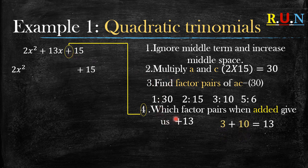When you look at 1 and 30, that's 31 — very far from positive 13. Then 2 and 15 gives us 17. When you look at 3 and 10, it gives us 13. So these two are the factor pairs that when added give us positive 13.